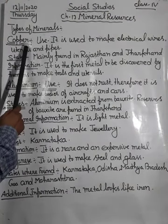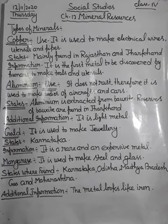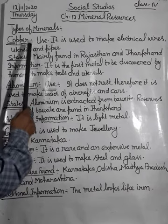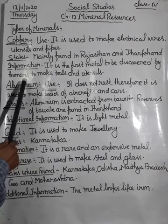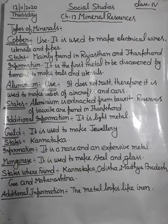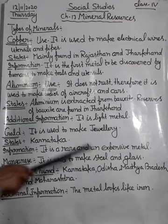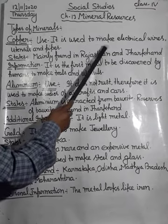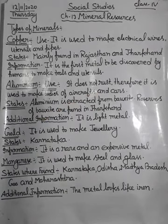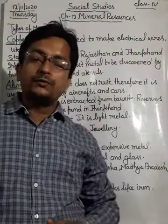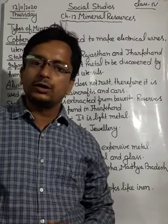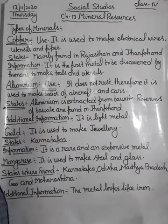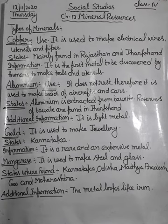First of all, there is copper. What is the use of copper? It is used to make electrical wires because current can safely flow through it. It is also used to make utensils and pipes. All these things are made from copper.